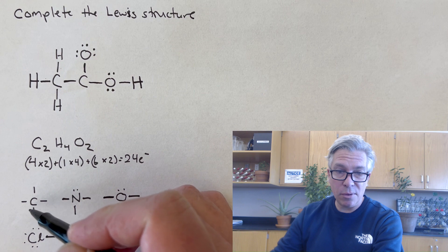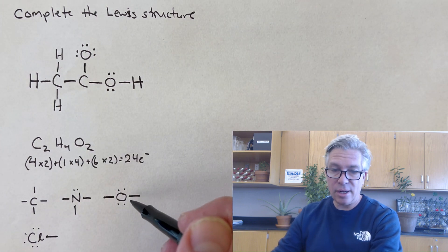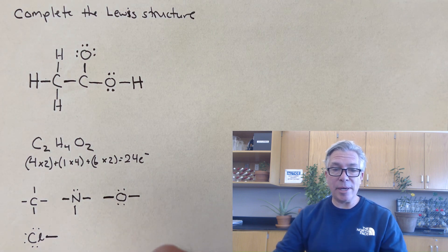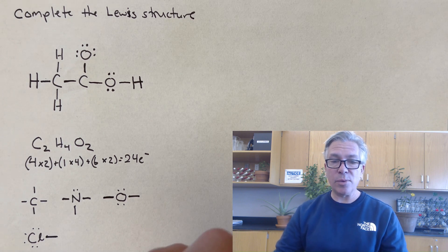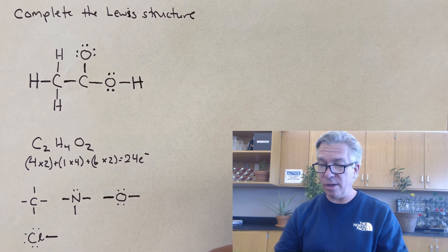This carbon only has three bonds. It should have four. And the oxygen only has one bond and it should have two. I've run out of electrons. So if you've been paying attention in chemistry class and in life in general, you know that when you run out of electrons but things still need an octet, you have to start doubling up. You have to make double bonds.